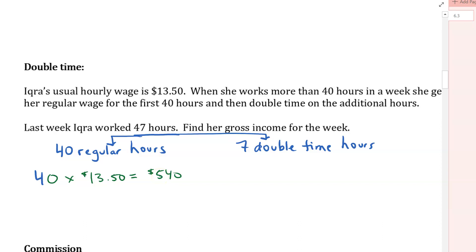Looking over to her double time, well, before I do this, I'm going to say, what is her double time rate? So I'm going to go and say $13.50 times two. So she's going to have a double time rate of $27 for every hour. And she worked seven double time hours, so I'm going to say seven times $27 is going to be equal to $189.